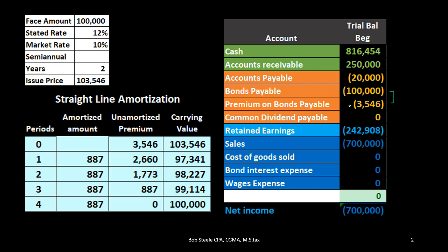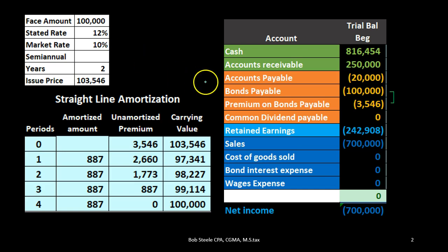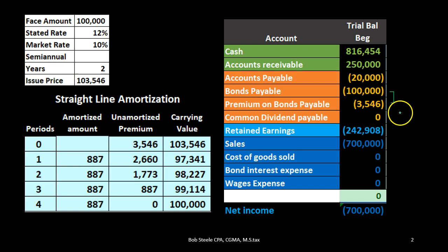Why is the premium there in the first place? Because we issued the bond for more than the face amount, due to the difference between interest rates. A logical way to get rid of this premium over the life of the bond is to expense it to interest expense as we go — because that's really what it is. The easiest way to do that is the straight-line method.